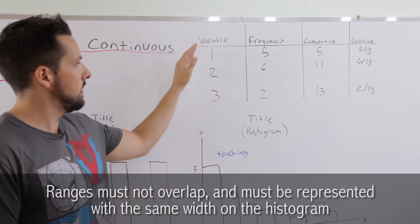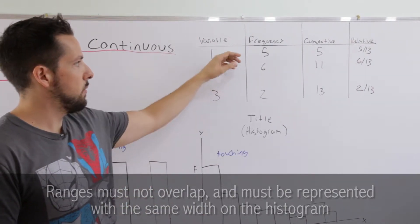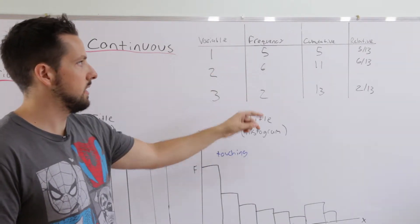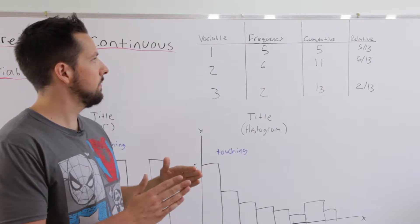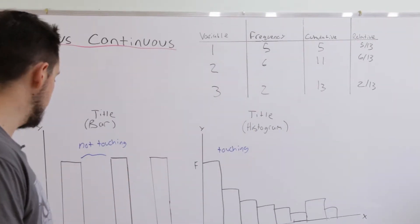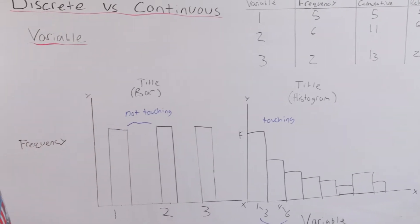So what you do is you get your variable. You count up the number of times it appears in the data set and that's going to be your frequency. And then you plot the variable on the x-axis and the frequency on the y-axis and you end up with a bar graph.